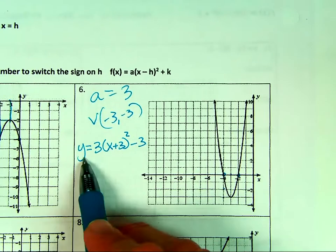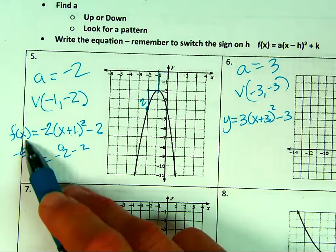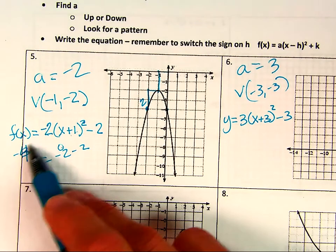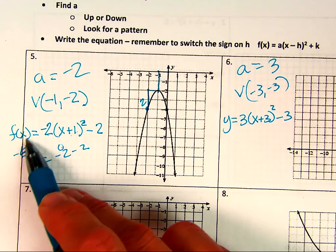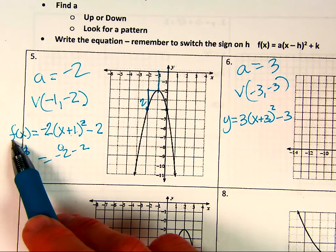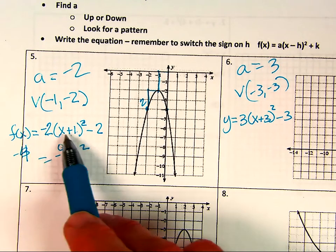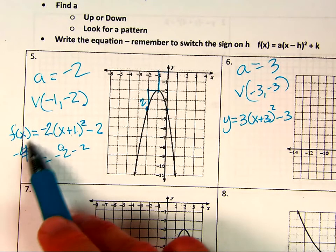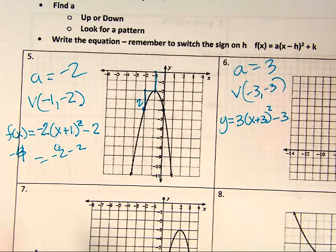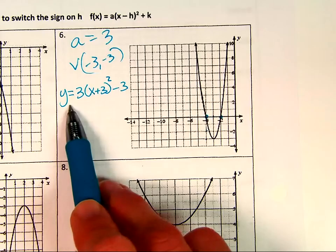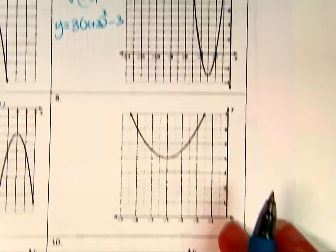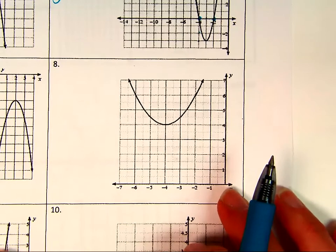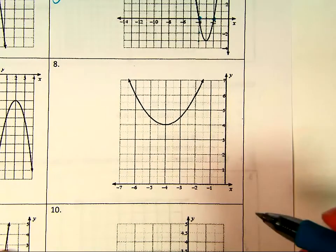One quick note: F(x) versus Y. When we're talking about functions, F(x) uses function notation — F tells you the function name, x tells you the variable. But you can also use Y; they're interchangeable — just Y dressed up as F(x).